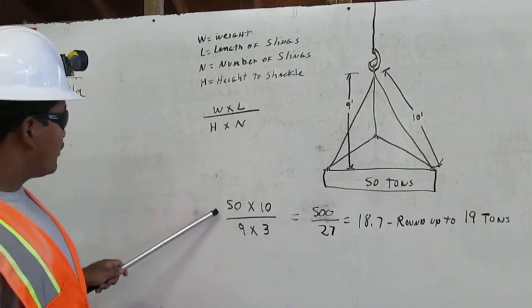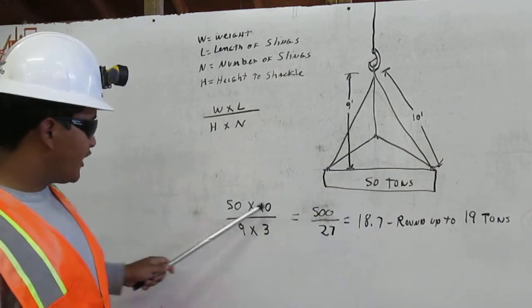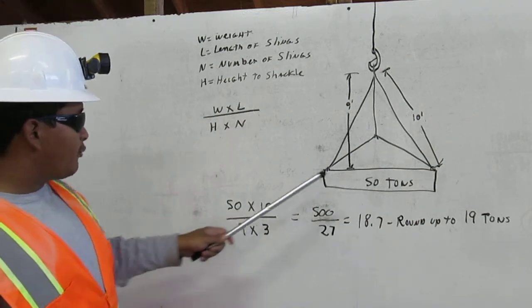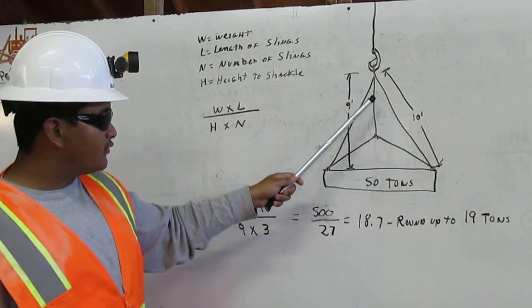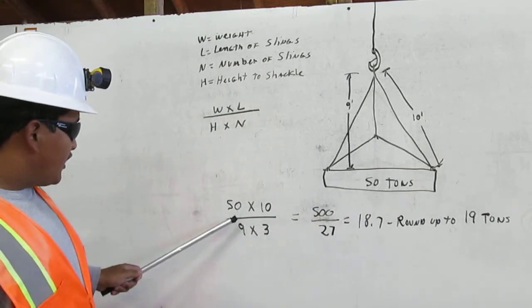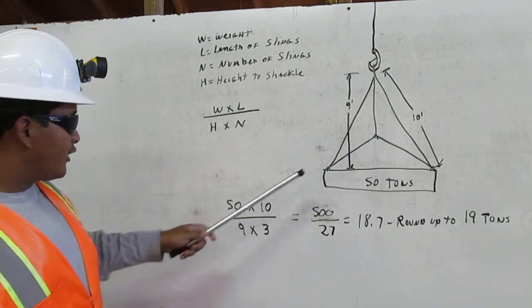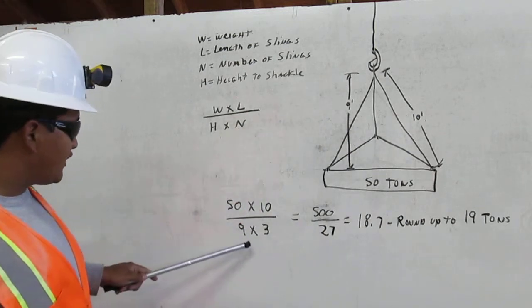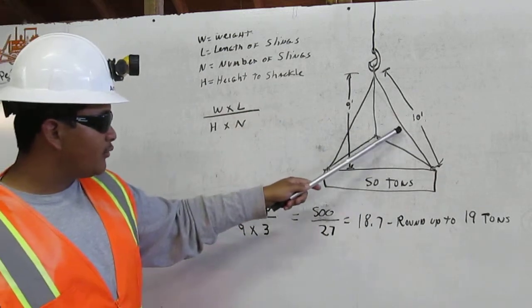First we are going to calculate the weight. It is 50 ton weight. 50 times 10, 10 for the size of the sling. And 9 times - it is 9 going to the shackle. 9 times 3, for 3 slings: 1, 2, 3.